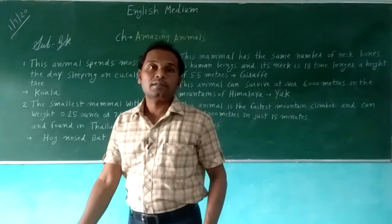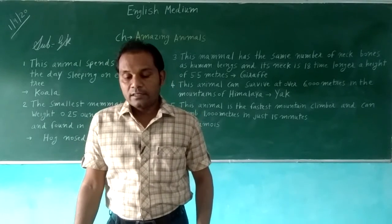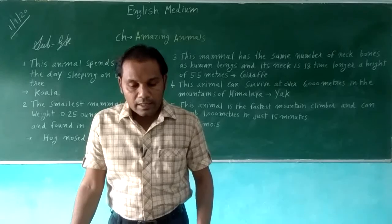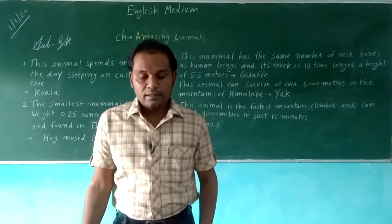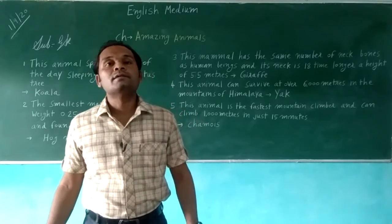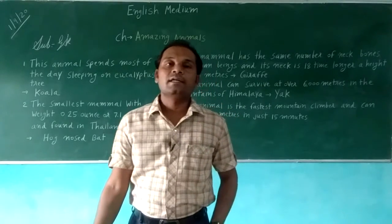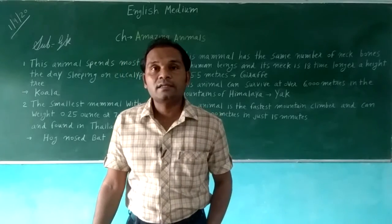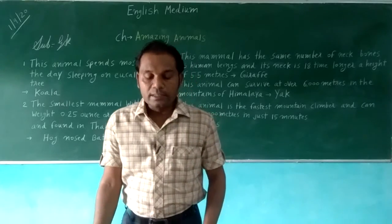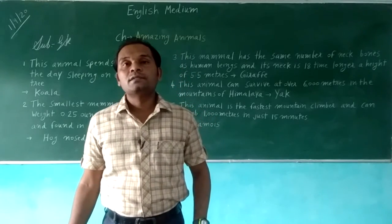Next is the smallest mammal, with a weight of 0.25 oz or 7.1 grams, and a width of about 1 inch. It is found in Thailand. It is the hog-nosed bat. The hog-nosed bat weighs just 7.1 grams and is 1 inch wide — it is also an amazing mammal.